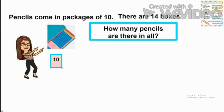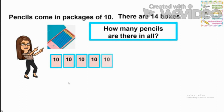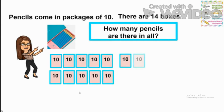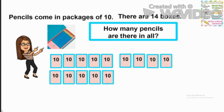Count along with me: 1, 2, 3, 4, 5, 6, 7, 8, 9, 10, 11, 12, 13, 14. Did you notice I am drawing in a 10-frame way, but this time I did it horizontally. Remember, the 10-frame way helps us keep our drawings organized and helps us group our numbers when we're ready to make a new unit.